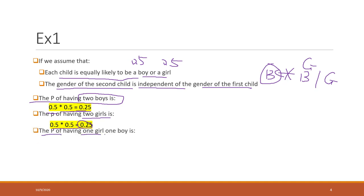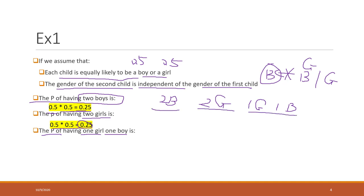What is the probability of having one girl and one boy? If you have two children, there are only three scenarios: two boys, two girls, or one girl and one boy. Having two boys is 0.25, having two girls is 0.25, so the probability of having one girl and one boy is 1 minus 0.25 minus 0.25, which equals 0.5.